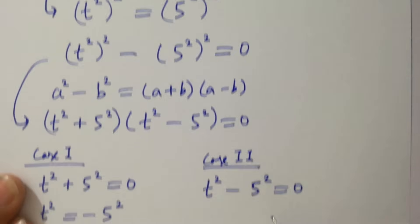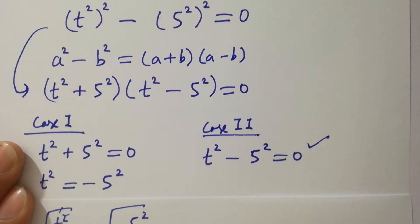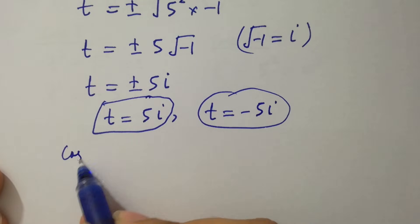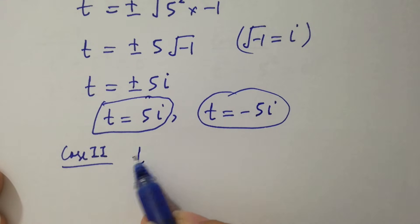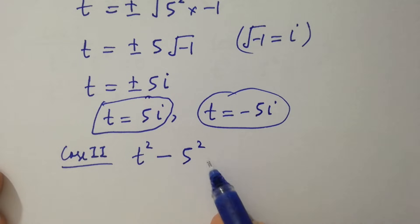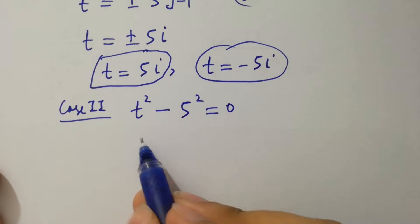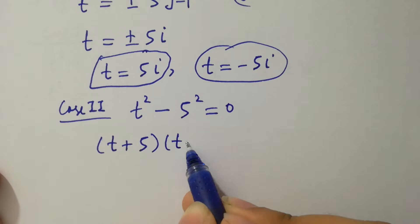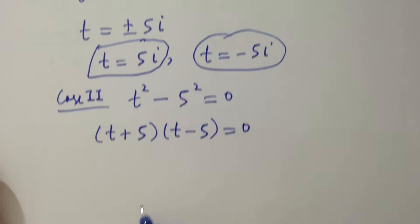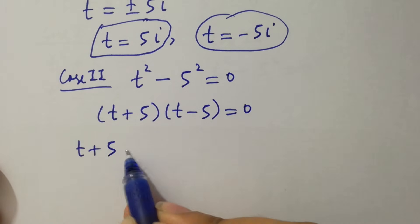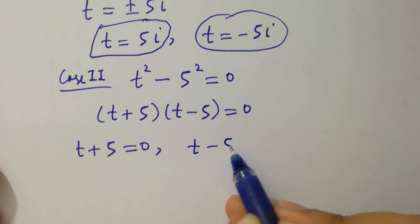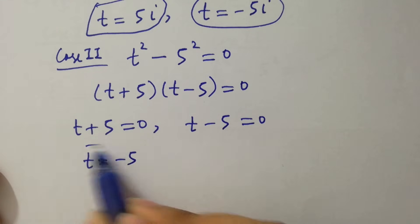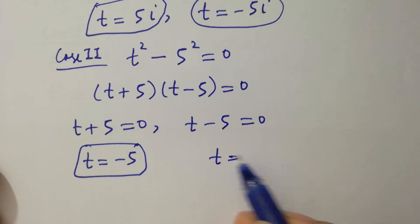From Case 2, t² minus 5² equals 0. Applying the formula a² minus b² equals (a+b)(a−b), we get (t+5)(t−5) equals 0. Either t + 5 = 0 or t − 5 = 0, giving t equals −5 and t equals +5, our real solutions.